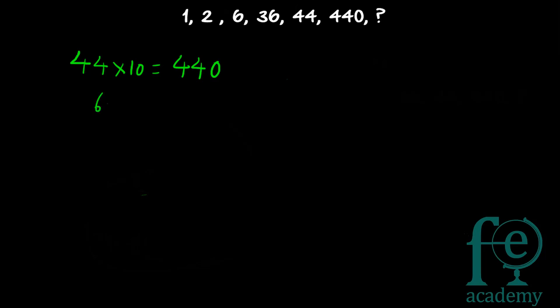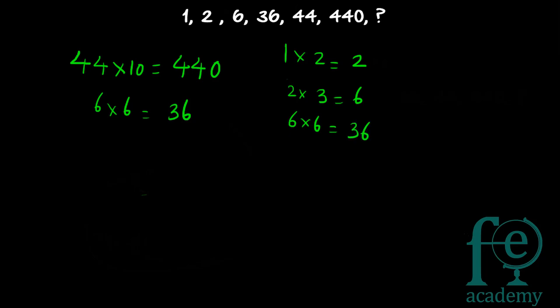Any other multiplication can also come: 6 into 6 is equal to 36, and 2 into 3 is equal to 6, and 1 into 2 is equal to 2. So: 1×2=2, 2×3=6, 6×6=36. But if you continue with this pattern, there is no multiplicative relationship between 36 and 44, since 36 plus 8 is equal to 44.